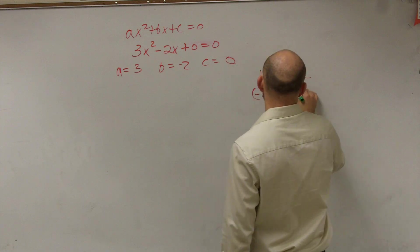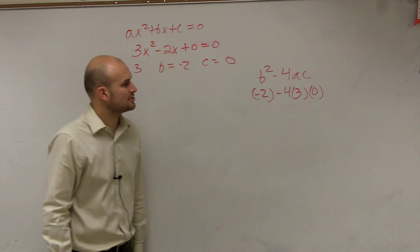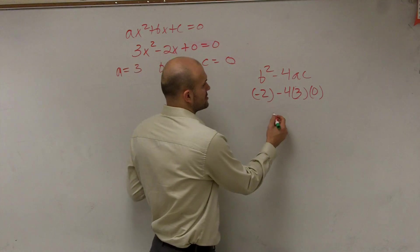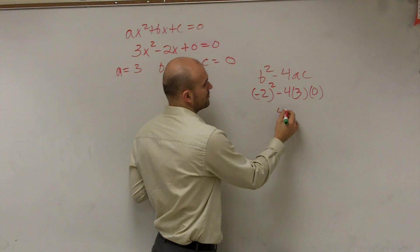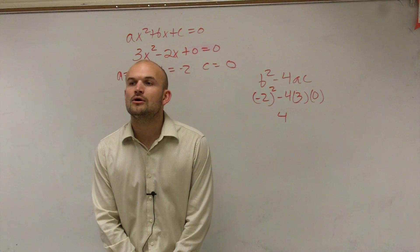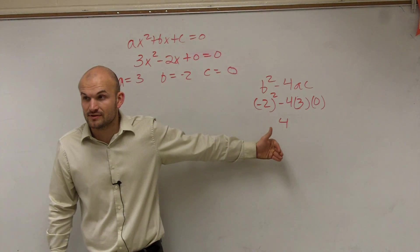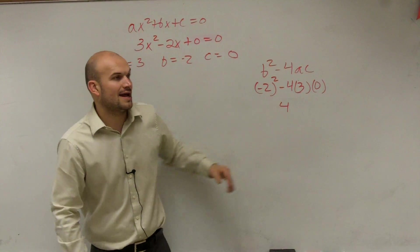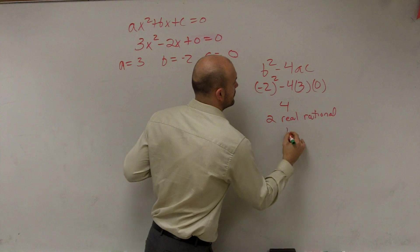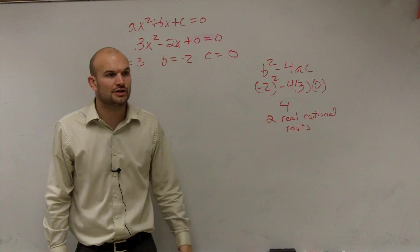We have b squared, which is negative 2, minus 4 times a times c. Obviously, negative 4 times 3 times 0 is just going to equal 0. So negative 2 squared equals 4. Now remember: if our discriminant is positive and a perfect square number, then we're going to have two real rational roots. If it's positive but not a perfect square, then it would be two real irrational roots.